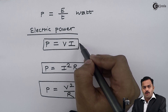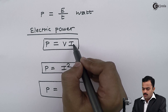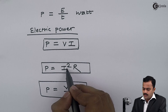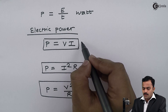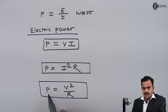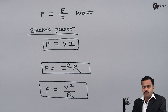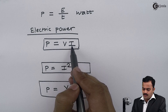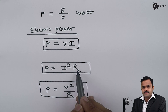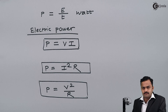So depending on whatever parameters are known — either voltage and current, or current and resistance, or voltage and resistance — we can use any one of these expressions. Here we have seen the concept of electric energy and electric power and how they relate to voltage, current, and resistance. In subsequent videos we will see how to use these formulas to get an answer. Thank you.